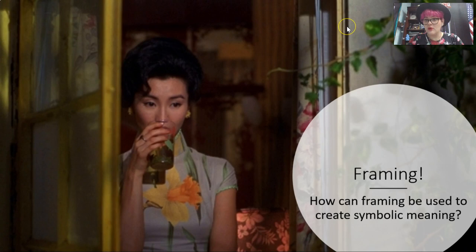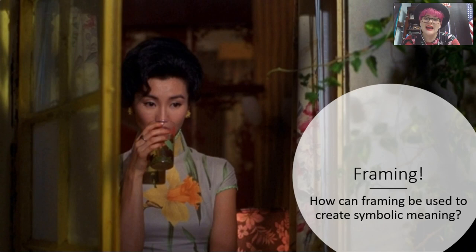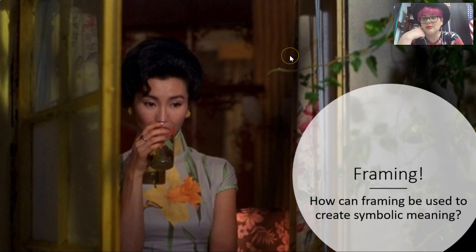We talked about framing last time, so refresh yourself. Pause here if you want to talk about what framing is and what its purpose is or can be. We talked a little bit about framing aesthetically and visually, but now I want to talk about how framing can create meaning and tone and emotion in a film or in a shot. So how can framing be used to create symbolic meaning? Go ahead and pause here and talk as a class about that.